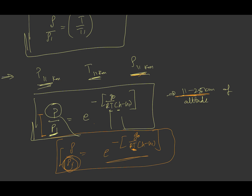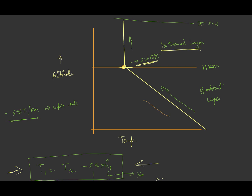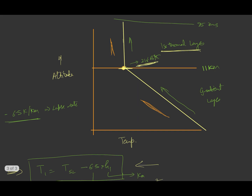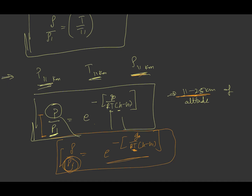This is the mathematical relationship for pressure, temperature, and density within the gradient layer and within the isothermal layer, and this is how the standard atmosphere charts are made. This is all about standard atmosphere. Thank you.